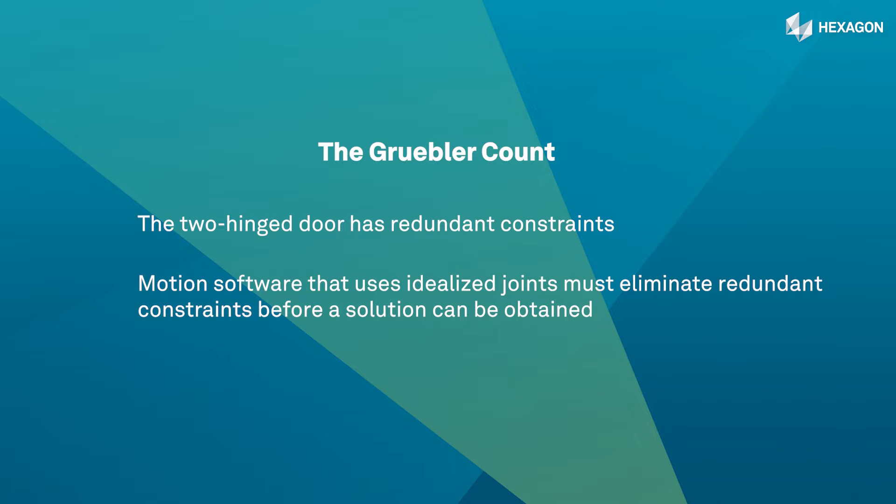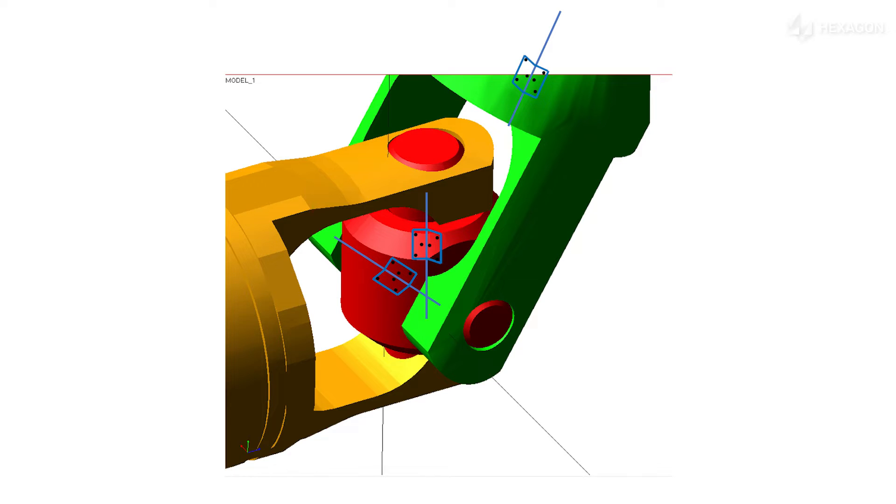Now if you really want to model a door with two or three hinges, you will need to add compliant force elements like bushings that have different stiffness in different directions. However, such force elements do not add or remove degrees of freedom like idealized joints do.